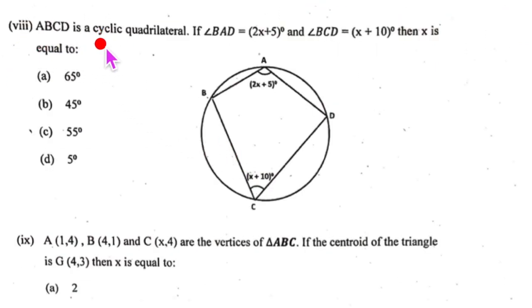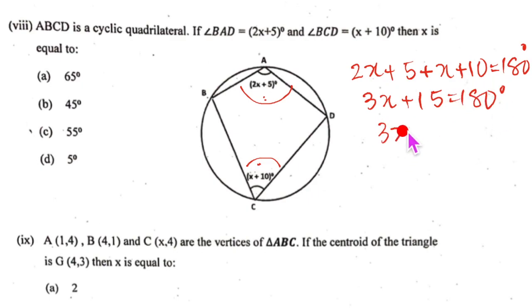Look at our eighth one. ABCD is a cyclic quadrilateral. If angle BAD is 2x plus 5 and angle BCD is x plus 10 then x is equal to. Now what do you know about the opposite angles of the cyclic quad? They are supplementary correct. So this is going to give us 180 degrees. So add the 3x is 3x plus 15 equal to 180 degrees.